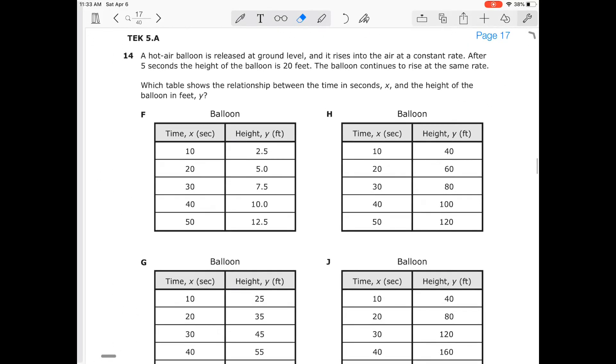Okay, so on number 14, we have TEK 5A, and we're going to talk about a hot air balloon is released at ground level. So we have one corner point at (0,0) and it rises into the air at a constant rate. After five seconds, the height of the balloon is 20 feet. So we have our other point at (5,20).